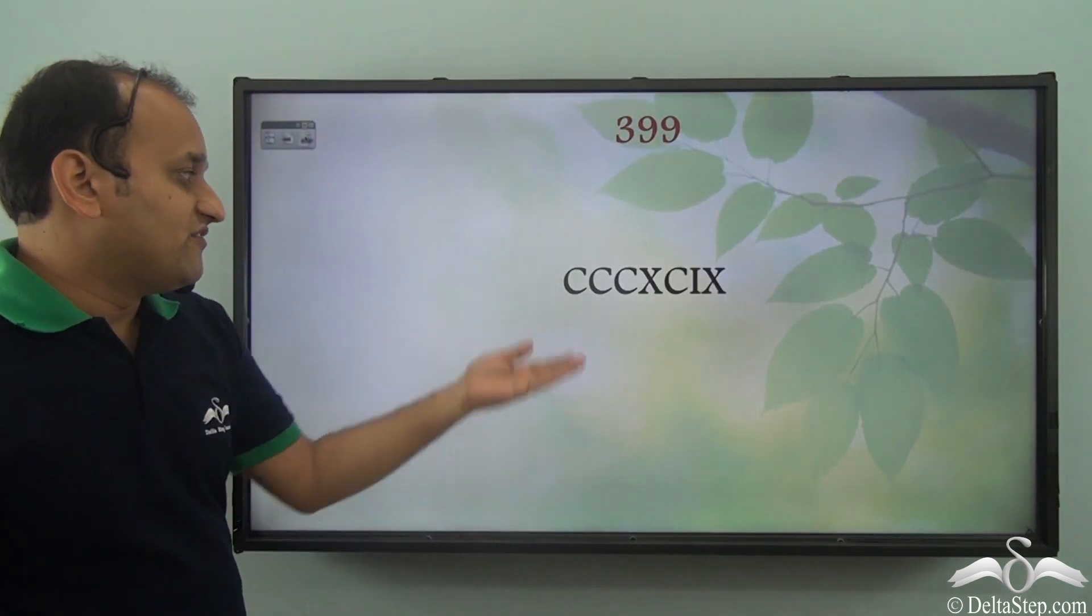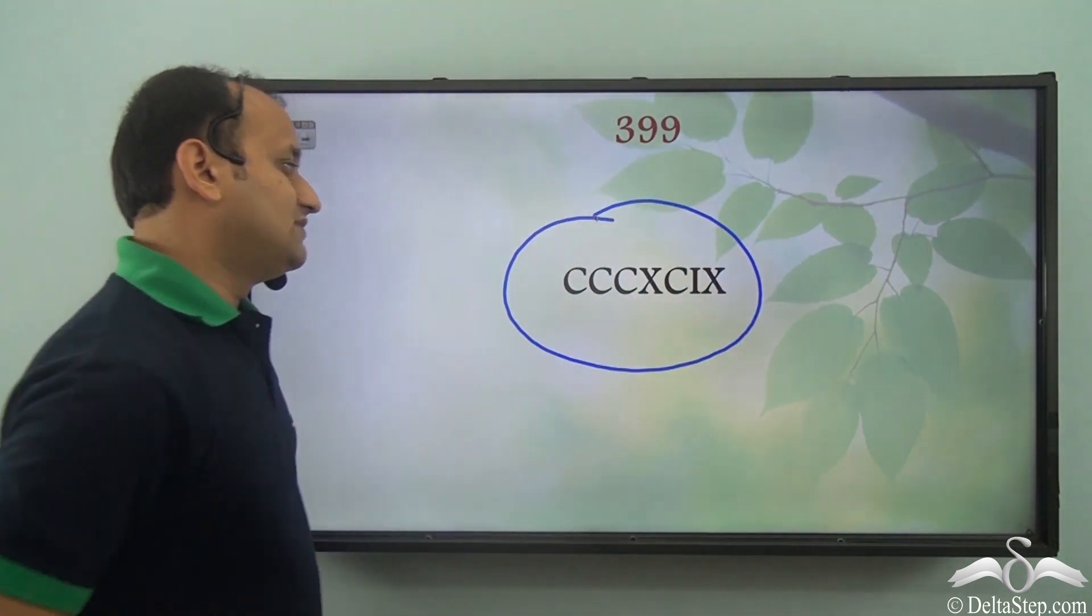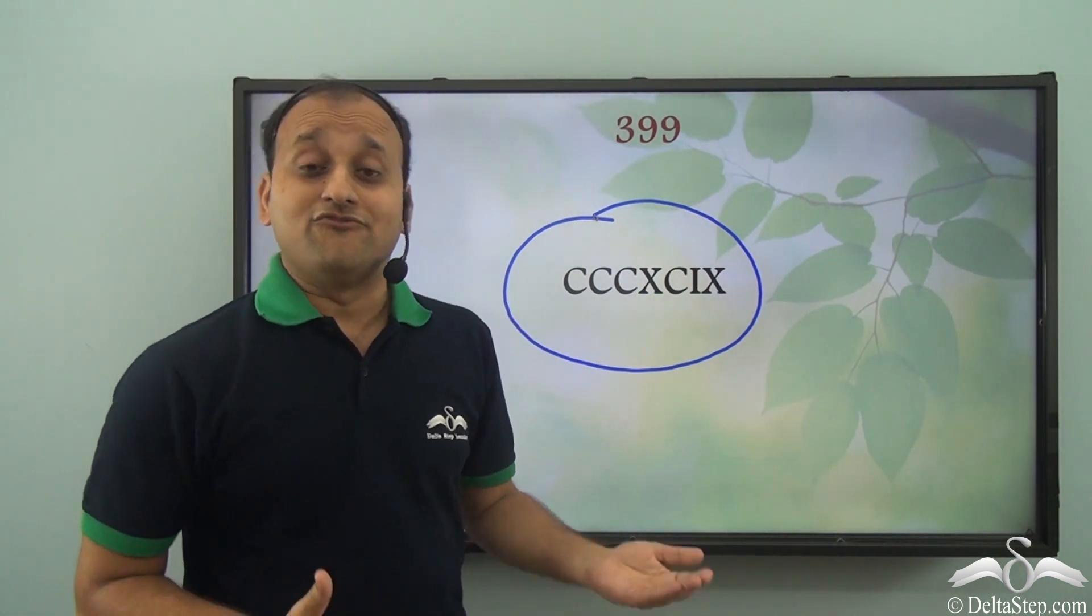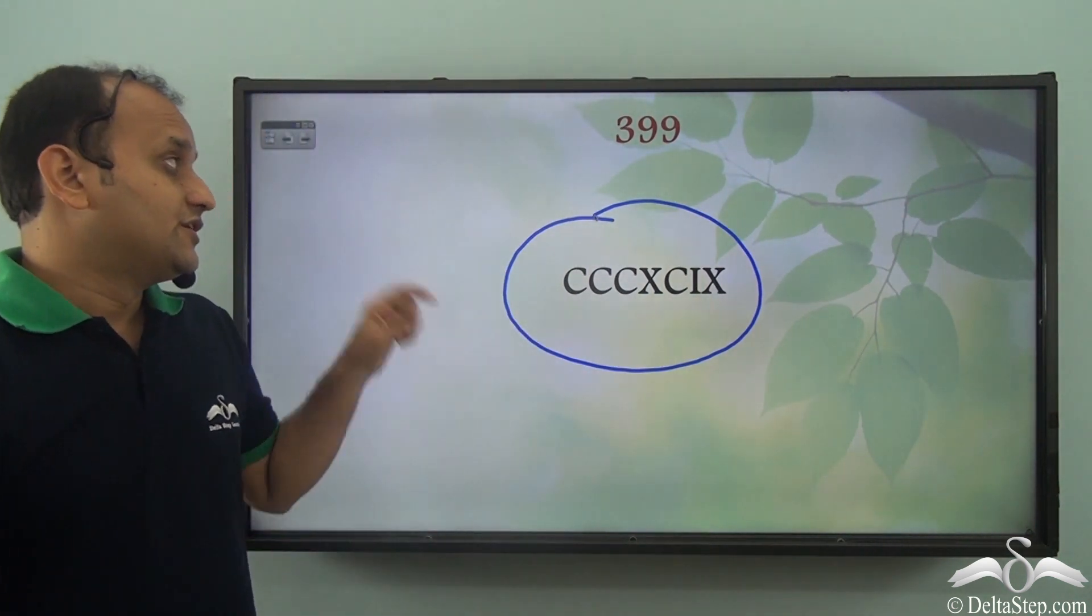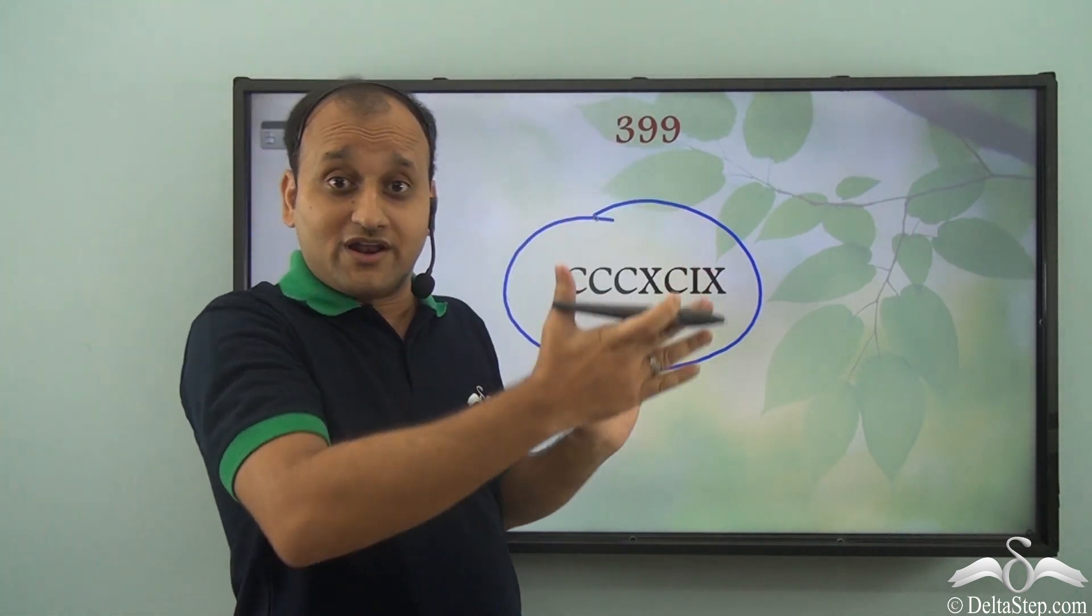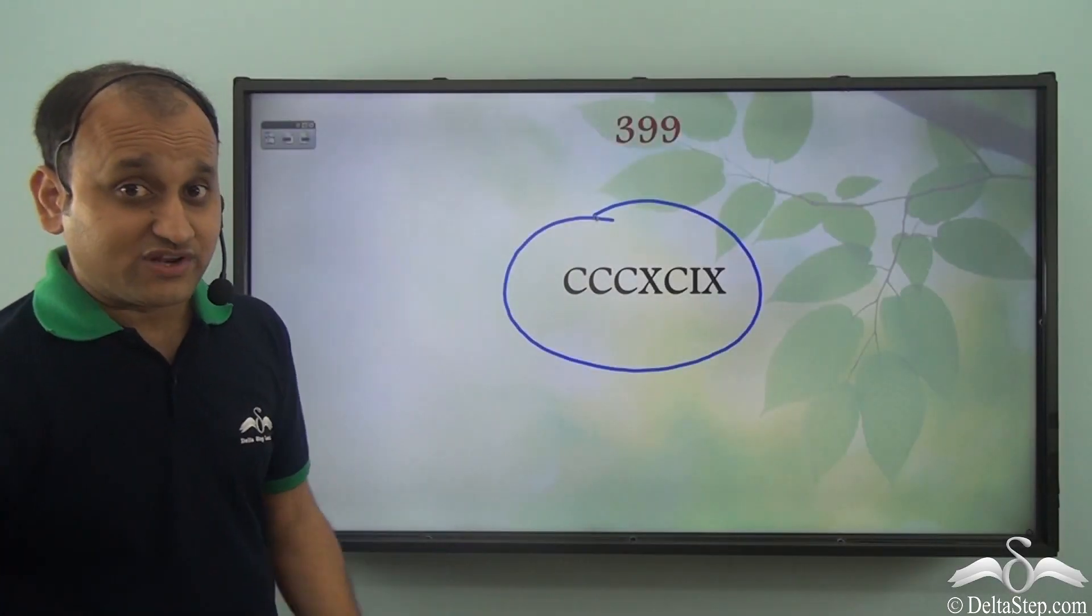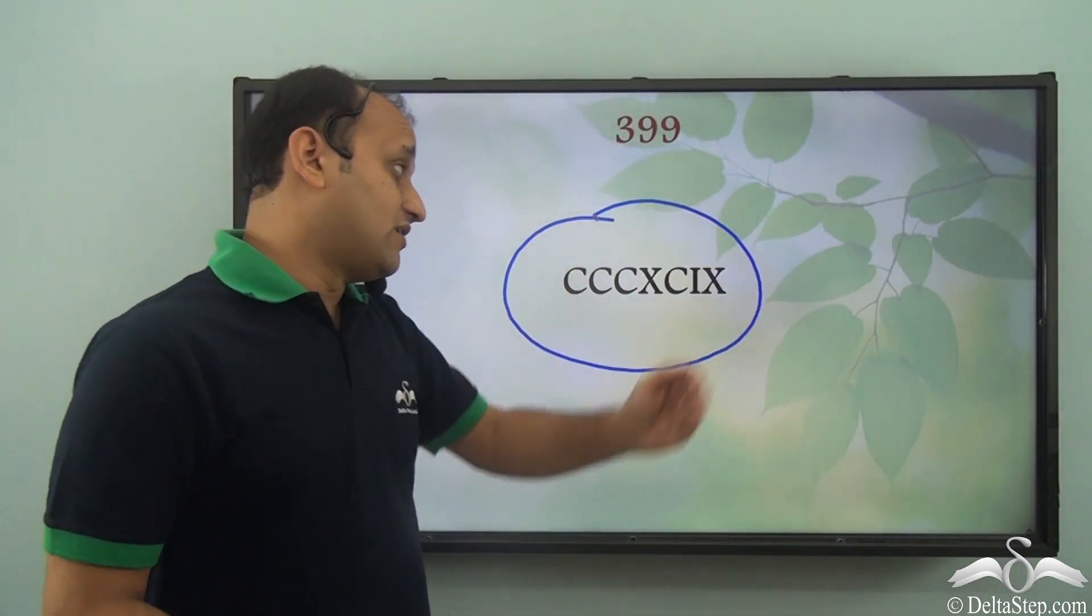So 1 less than X, and this is how we write 399. So when we represent 399, this is the representation in form of Roman numerals. So what did we do? Well, we broke it down into smaller numbers and we started with the largest symbol and gradually we moved to the smaller representations.